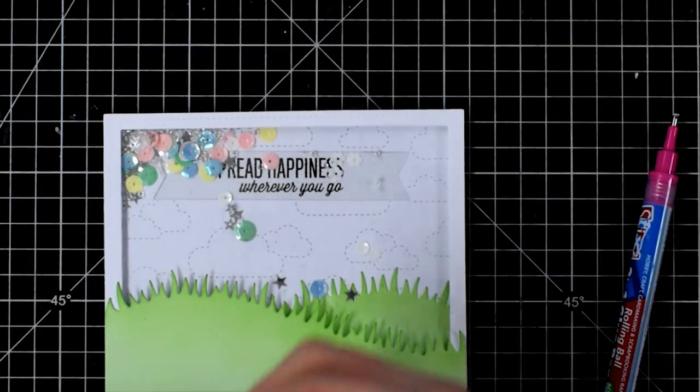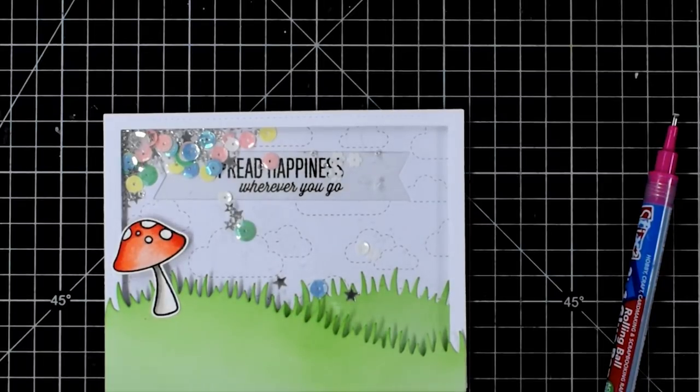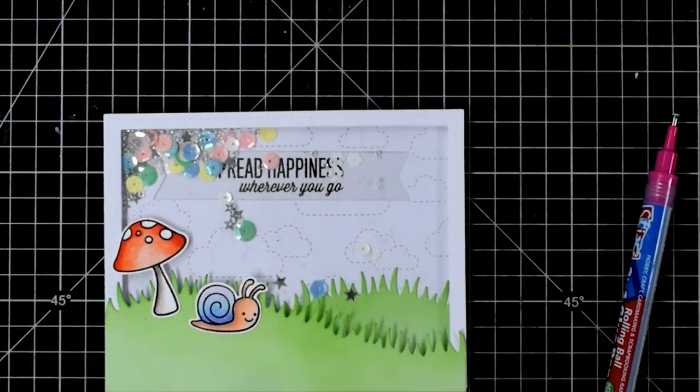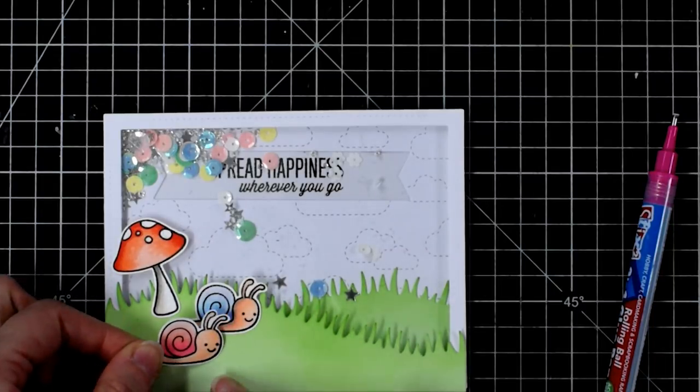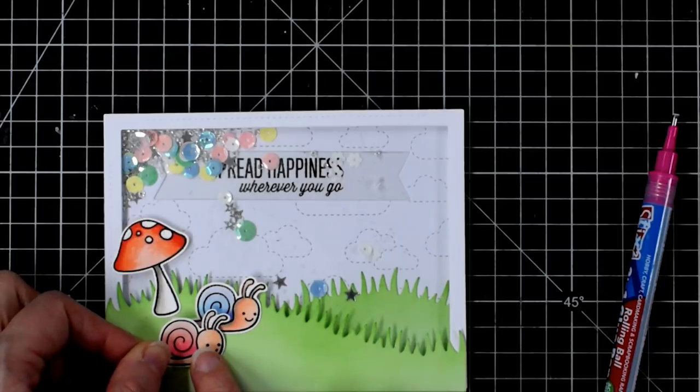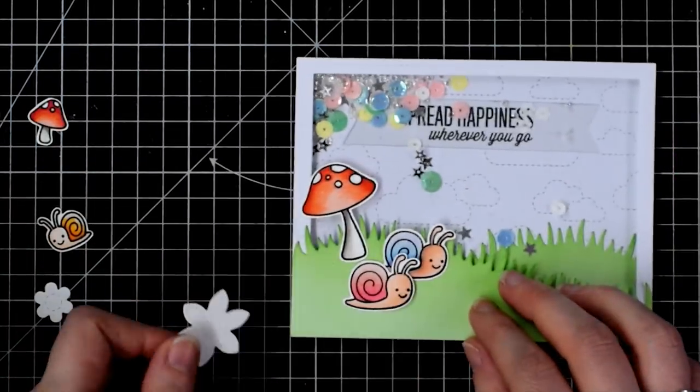Let's put my grass on top and now the fun bit where we get to stick on all of my colored in elements. So my original idea for this card was this is dad and mom snail and then there's a little baby snail going off to adventure through the world. But I wanted to add some flowers.